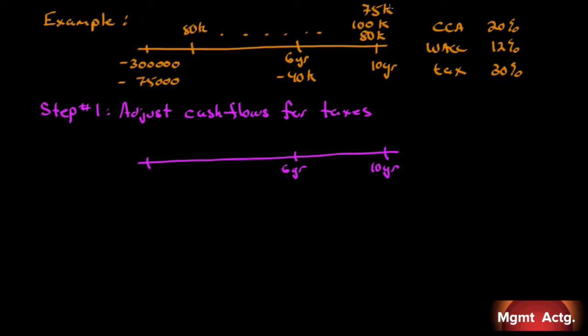At the end of 10 years we'll have a release of our working capital as well. The asset will produce before-tax cash flows of $80,000 a year for 10 years. After six years, we'll require some maintenance expense of $40,000. The asset belongs to a class with a capital cost allowance rate of 20%, the company's weighted average cost of capital is 12%, and we have a 30% tax rate. What is the net present value of this project?